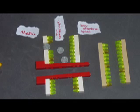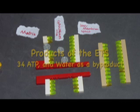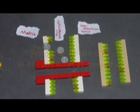Electrons from each molecule of NADH can cause the synthesis of up to three molecules of ATP and each molecule of FADH2 can cause the synthesis of up to two molecules of ATP. In all, the electron transport system creates 34 molecules of ATP with a byproduct of water.